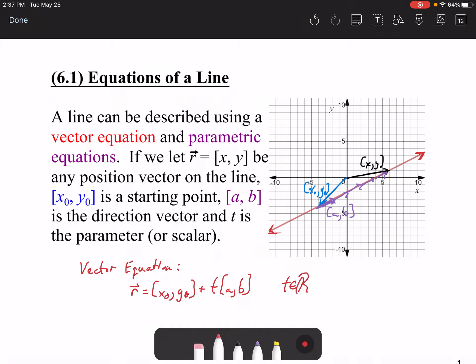And these values of x₀, y₀, a, and b are also real numbers. Or what you can have is your parametric equations, which separate the x components and the y components. So x equals x₀ plus ta, and y equals y₀ plus tb.